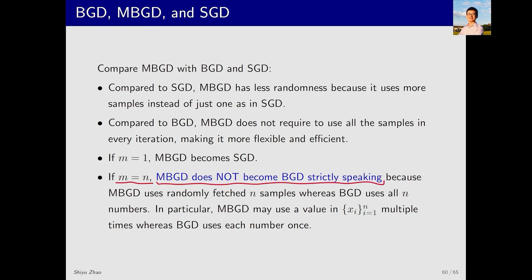Although both BGD and MBGD use N samples, BGD uses all N samples, while MBGD randomly selects from the N samples. This means that some samples might be selected multiple times, while others might not be selected at all. This introduces a slight difference between the two algorithms. In many cases, this difference is negligible, but I hope you can understand this subtle difference mathematically.